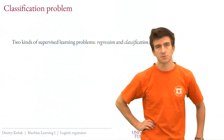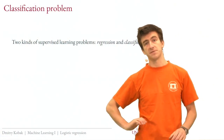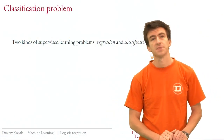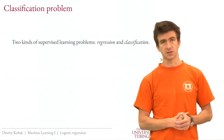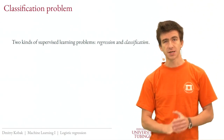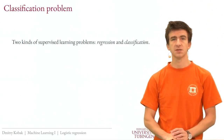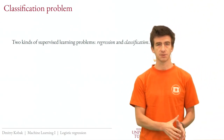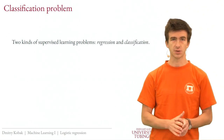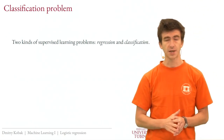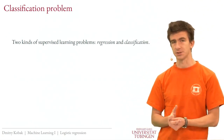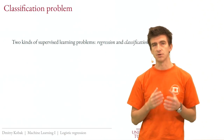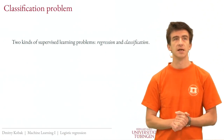Hello and welcome to lecture 5 of this introduction to machine learning class. The topic of today's lecture is logistic regression, which means we switch from talking about regression — the topic of the initial four lectures — to classification. This will be our topic for the next four lectures.